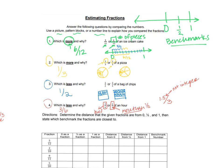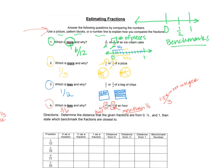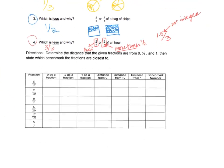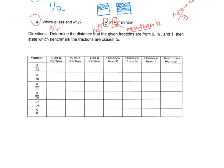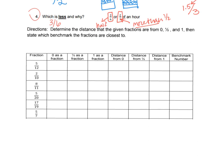The last comparison really gets into the benchmark idea. If we think about how close fractions are to zero, one-half, and one, that helps us estimate. For 5/12: zero as a fraction with denominator 12 is 0/12, one-half would be 6/12, and one would be 12/12. The distance from zero is 5/12, the distance from one-half is only 1/12, and the distance from one is 7/12.